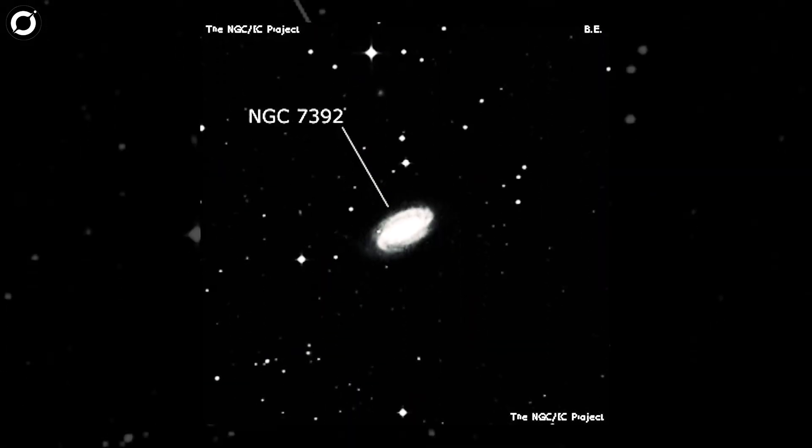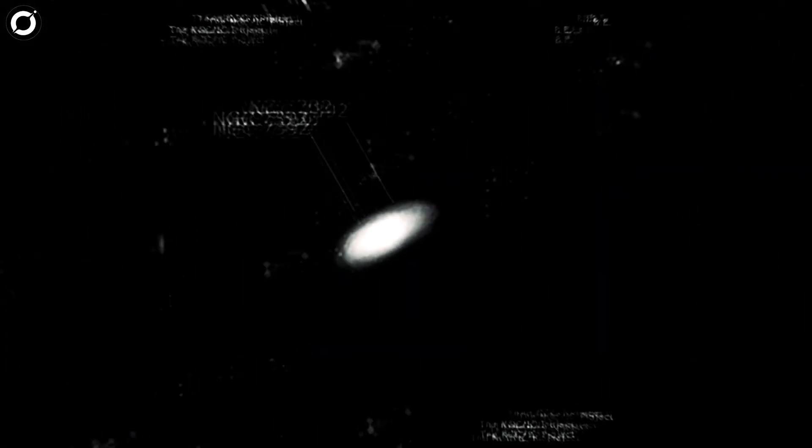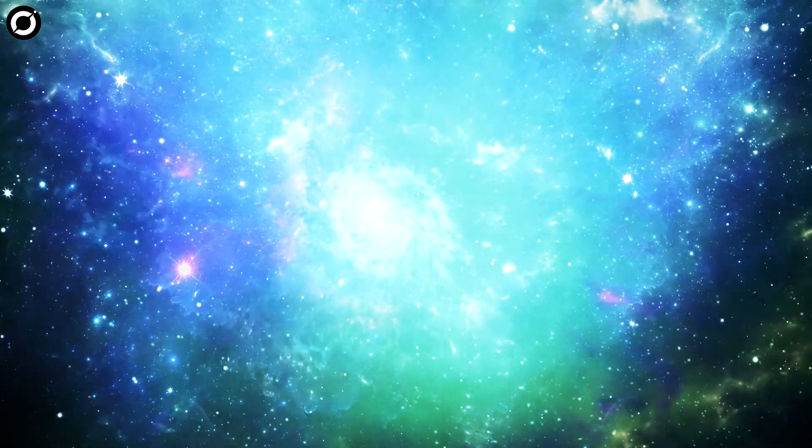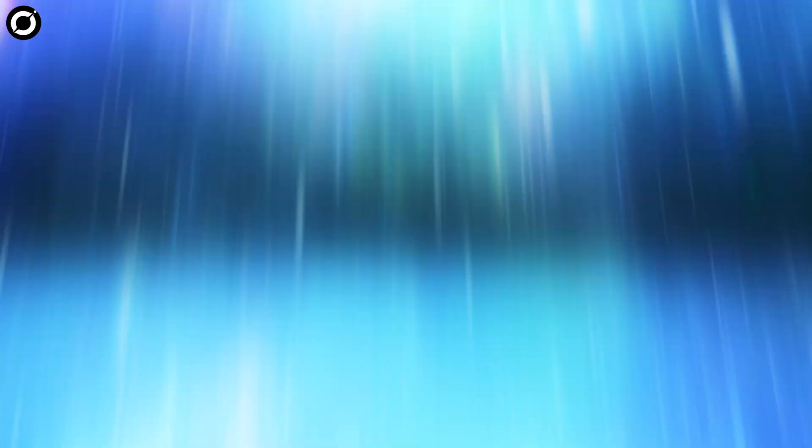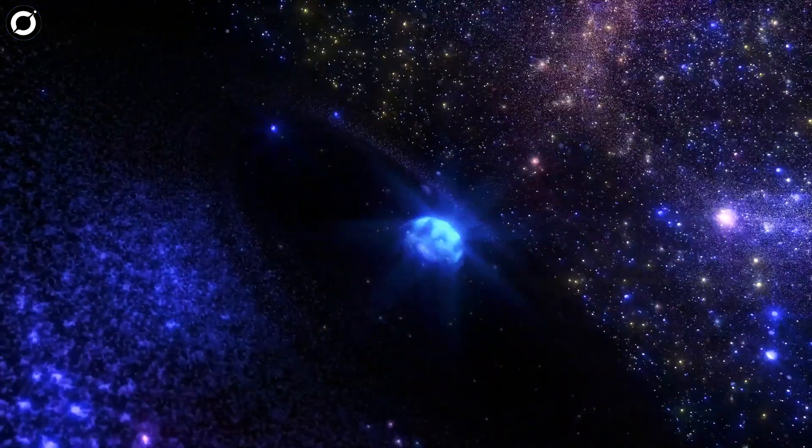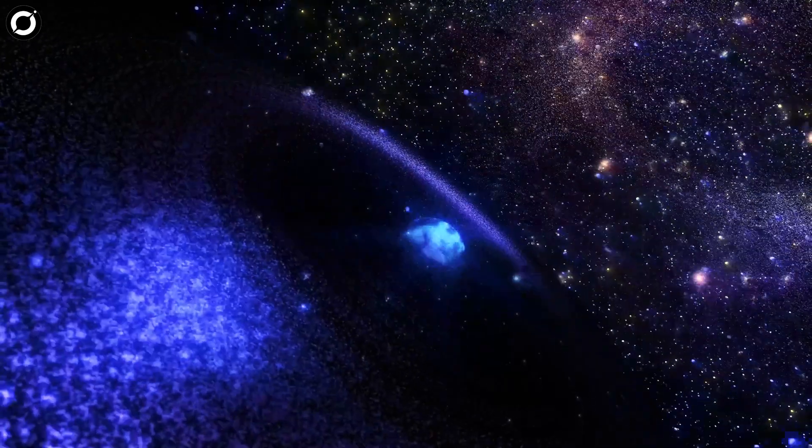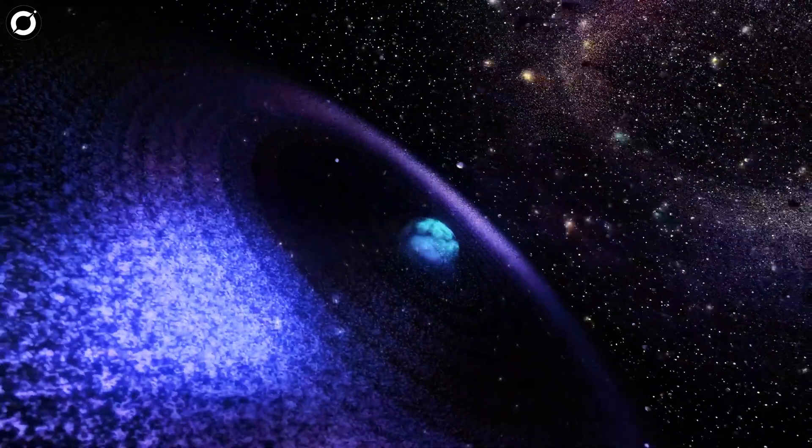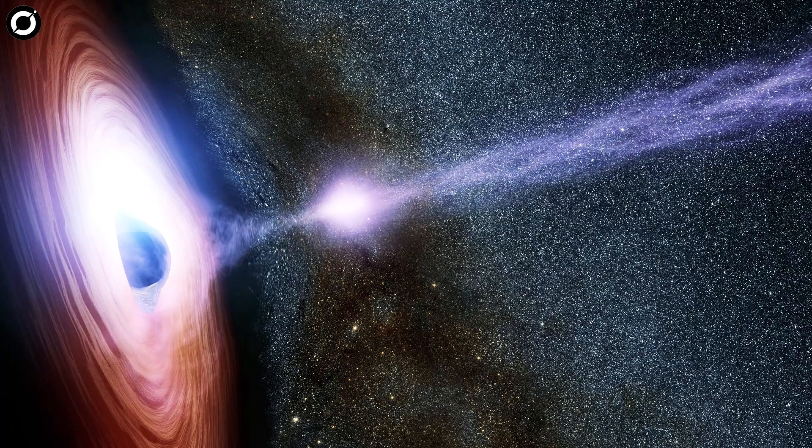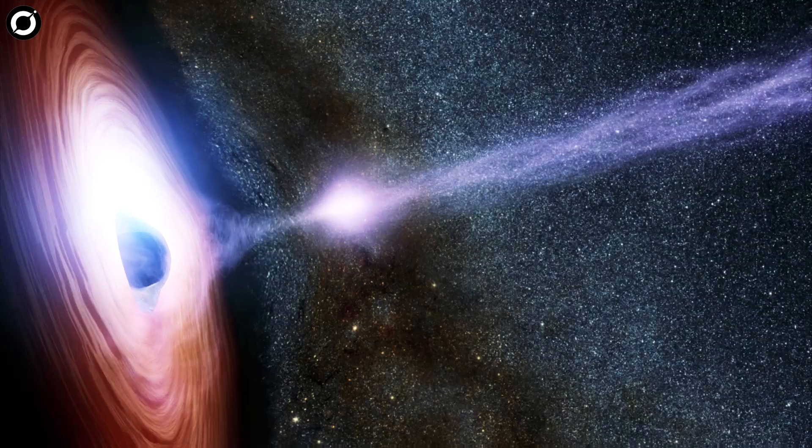NGC 7392, however, is a blue galaxy churning out many new stars and creating a lot of dust in the process. This dust could obscure the center of the galaxy, where the supermassive black hole lives, in optical and ultraviolet light. But infrared light enables astronomers to peer through that dust and see what's going on.